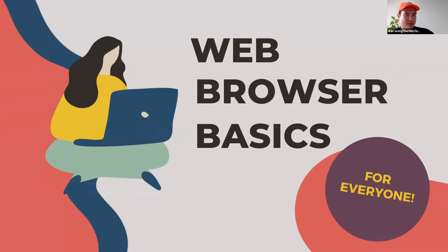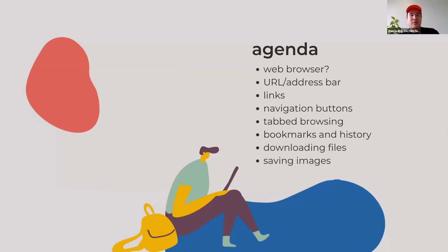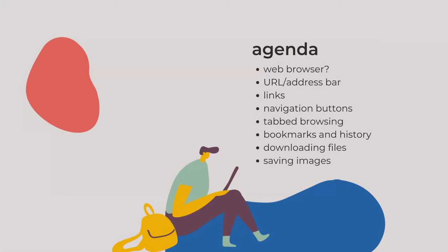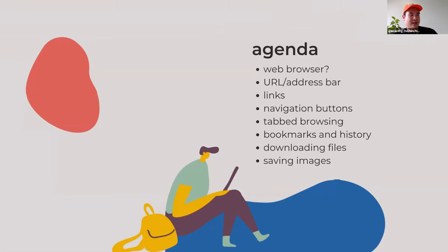Welcome to Web Browser Basics for everybody. Today our course is going to be something very simple on how to use a web browser. The agenda for today: I'm going to show you with my computer what these things are. We're going to go over what is a web browser, what the URL is, what the address bar is, links, your navigation buttons, tabbed browsing, bookmarks and history, downloading files, and saving images.